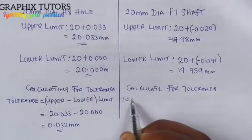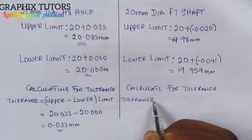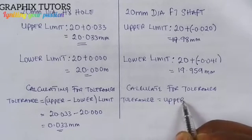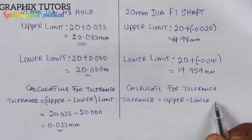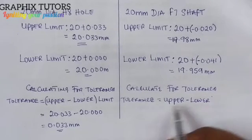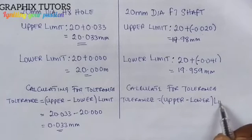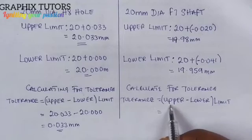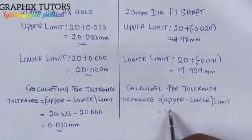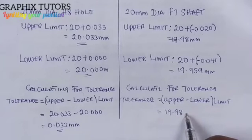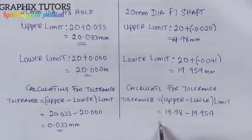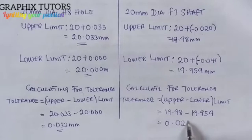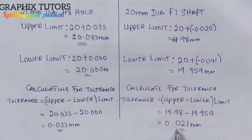Now we calculate tolerance for the shaft. Tolerance equals upper limit of shaft minus lower limit of shaft. The upper limit is 19.98 and the lower limit is 19.959. So, 19.98 minus 19.959 equals 0.021mm. We have successfully found the tolerance for the shaft.